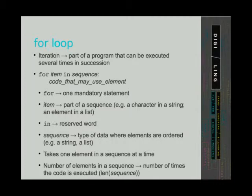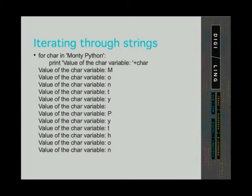The for loop takes one element in a sequence at a time and executes some code. The code will be executed as many times as there are elements in the sequence. If we iterate through a string with 4 characters, the code will be executed 4 times. In this example we iterate through the string 'Monty Python'. We write 'for', give a name to the auxiliary variable — for example 'character' — then 'in', and then the string 'Monty Python'. The code we want executed is a message stating what value is currently stored in the auxiliary variable 'character'. The for loop iterates through every character and returns the message for every character.